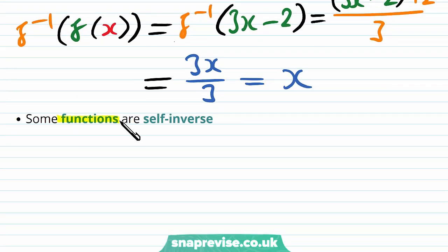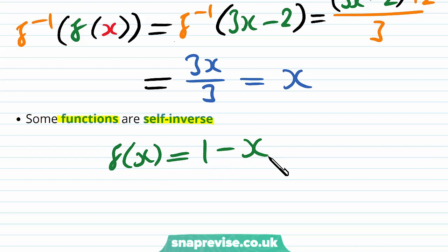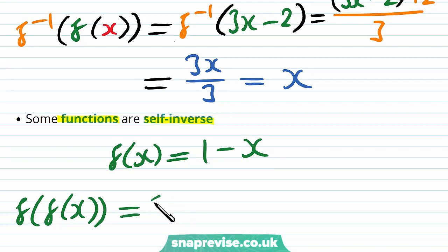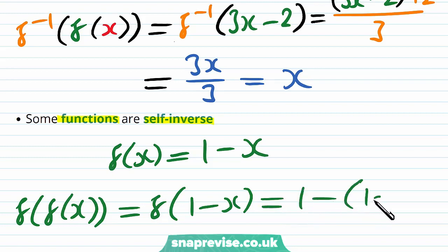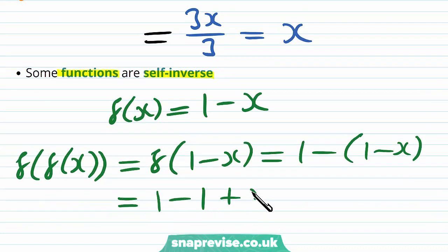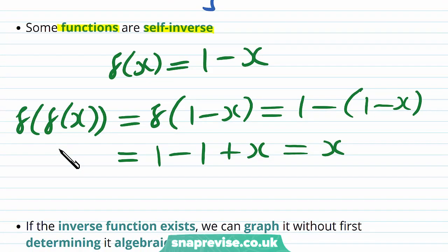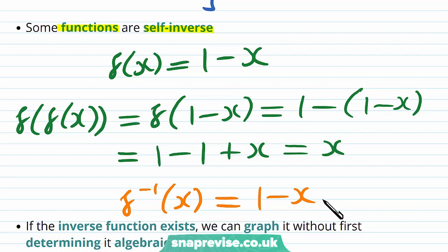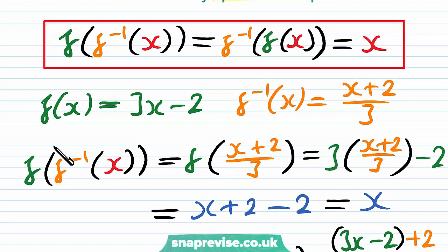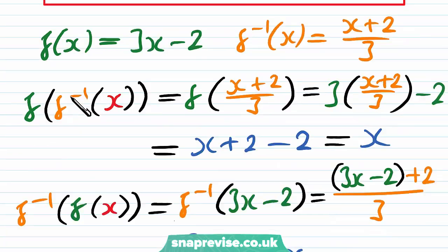Some functions are self-inverse. Let's say we have f of x equals 1 minus x. If we compute f of f of x, we get f of (1 minus x), which equals 1 minus (1 minus x), which equals 1 minus 1 plus x, which is x. Therefore the inverse function must also be 1 minus x, since f of f inverse of x equals x and f inverse of f of x equals x.